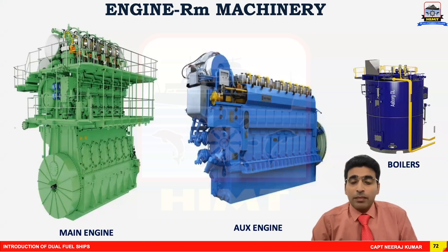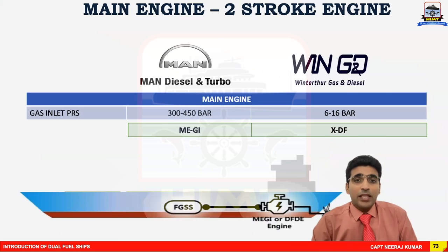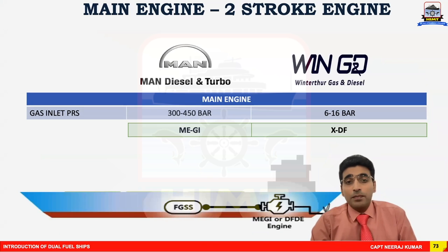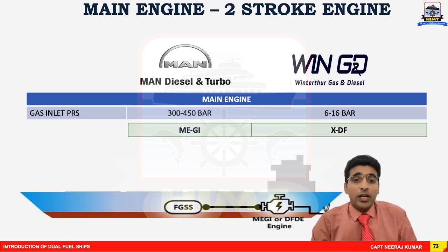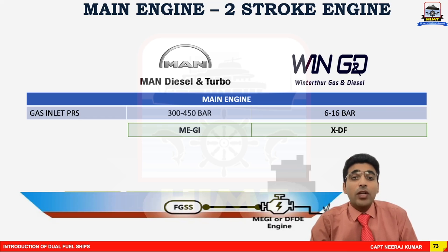Let's start with engine room machinery. The main machinery in the engine room that consumes fuel includes the main engine, auxiliary engine, and boilers. There are two prominent makers of main engines: MAN and WINGD. MAN's dual fuel engines are called MEGI engines, and WINGD's are called XDF engines. The key difference: MAN engines work on a gas injection pressure of 300 to 450 bar, whereas WINGD operates at 6 to 16 bar. Engineers working on these vessels need to be aware of this fundamental difference.